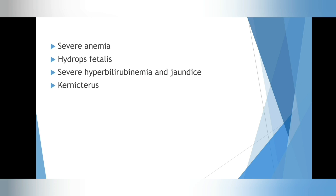One of the functions of red blood cells is to carry oxygen to tissues and organs, so when a baby is anemic and doesn't have enough mature red blood cells, there will be a problem. As a result, the baby responds by trying to make red blood cells very quickly to make up for the lack. The new red blood cells produced are erythroblasts, and erythroblasts are immature — because they are immature, they cannot carry out the function of mature red blood cells, which is to carry oxygen to vital organs.